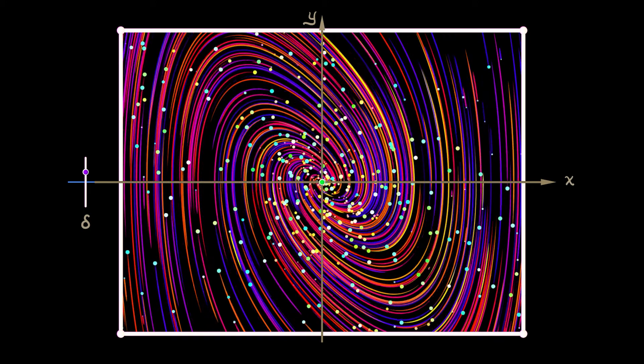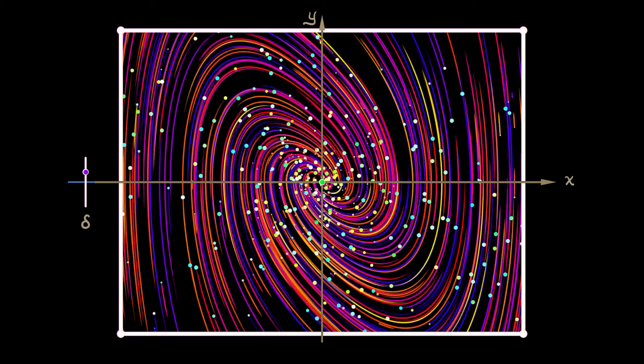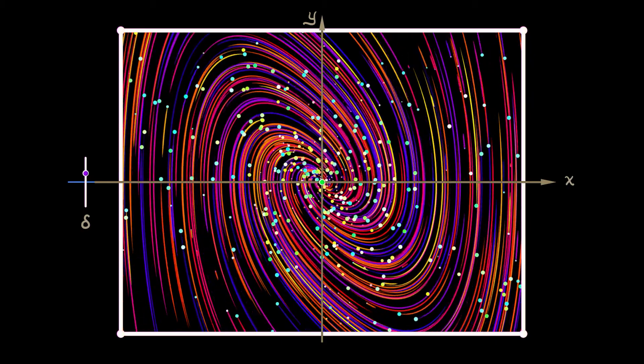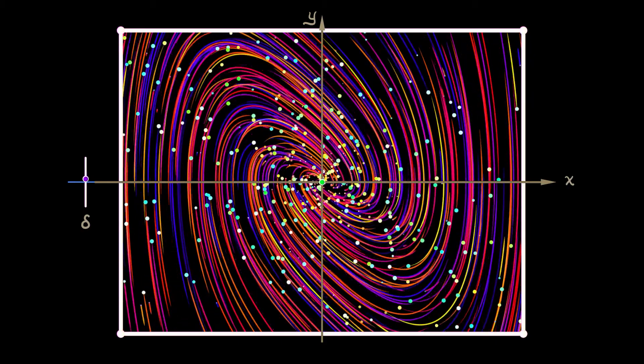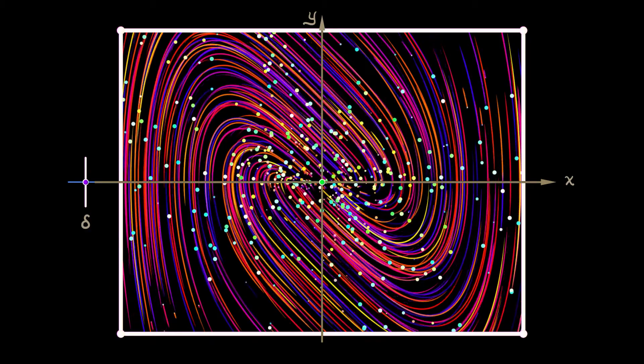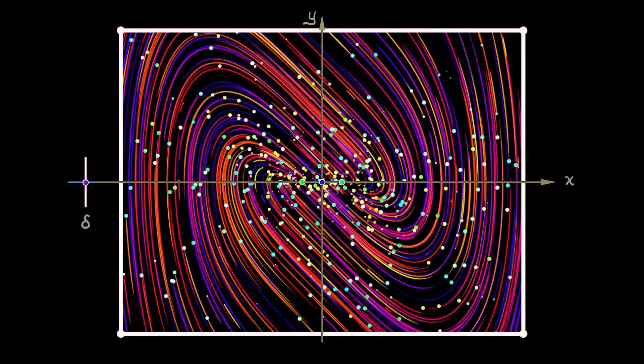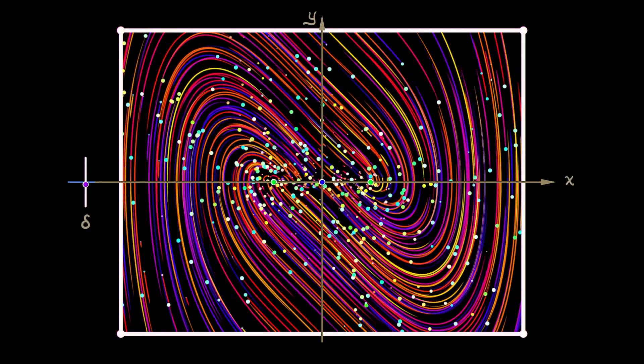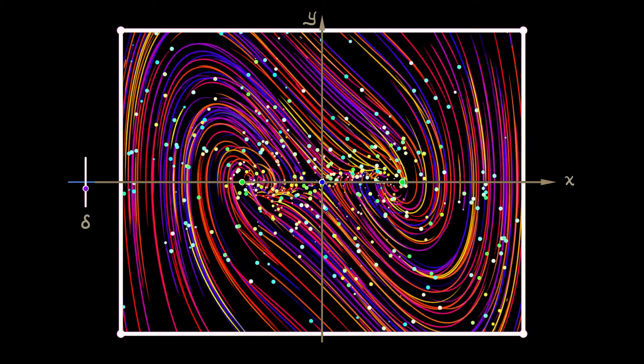And that becomes all the clearer when we simulate this system. Look at what is happening when delta is positive and we have that single equilibrium at the origin, and then as we pass delta through zero into that negative domain we see a pair of equilibria split off, inheriting the stability of that equilibrium at the origin. Yep, supercritical pitchfork.